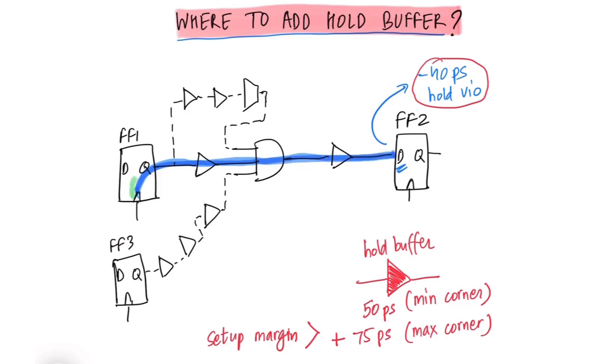We have another path which starts from the FF1 clock pin and takes a different route and ends up again in the FF2 D pin. And we have a third path which starts from the FF3 clock pin and it again ends up in the FF2 D pin.